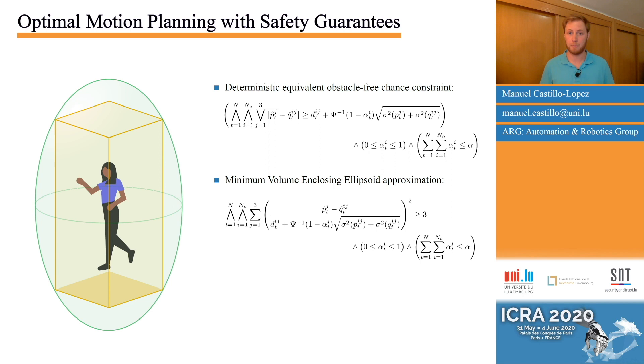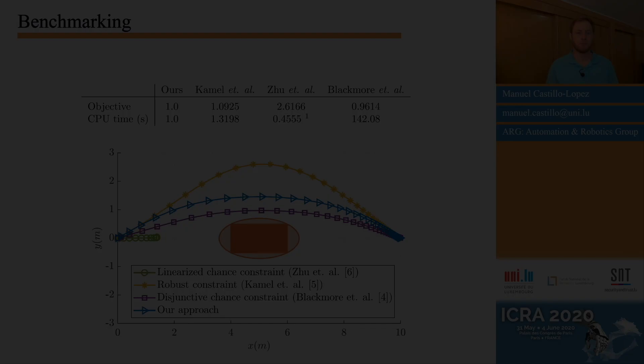The main drawback of this approach is that we restrict our obstacles to be defined by bounding boxes or infinite planes. In addition, we lose some space due to the ellipsoidal approximation. However, in practice, this is a small price to pay, especially for moving obstacles.